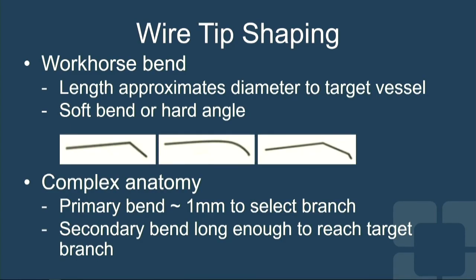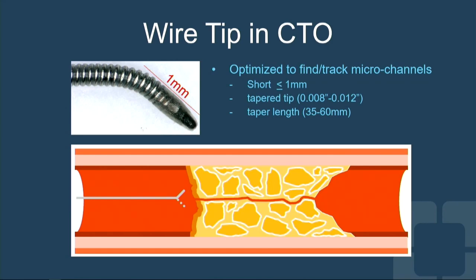The tip itself has to be shaped. There are workhorse bends, and this is an area of debate amongst operators — whether to use the needle introducer to shape the wire with an angle tip, or to gently stroke it to make a smooth curve. The idea with a workhorse bend is to make the tip approximate the diameter of the artery you're trying to wire. For more difficult lesions like side branches, you probably want a smaller primary bend and then a secondary bend to allow for reach. CTO wires typically have a very, very short tip specifically to access microchannels and negotiate very tight bends.